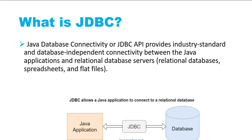JDBC stands for Java Database Connectivity. It's an API that provides an industrial standard and database-independent connectivity between Java applications and relational database servers — such as MySQL, Oracle, Postgres, Microsoft SQL Server, DB2 — as well as spreadsheets like Excel and flat files like CSV.